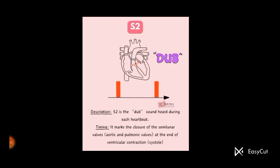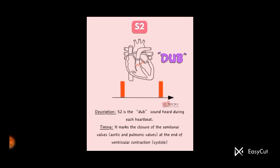Next we discuss about the S2 sound. S2 sound is a dub sound. So S2 is the dub sound which is heard during each heartbeat, which is known as S2 sound, and it marks the end of ventricular systole.